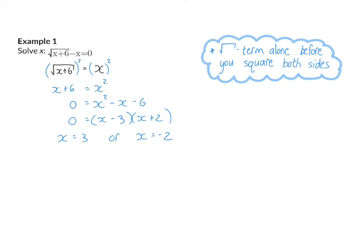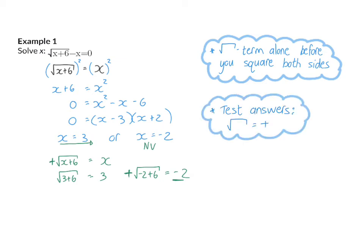Another very important thing to remember with square root equations — just like with fraction equations — is to always test your answers. To test, focus on the step where the square root is alone. We can clearly see the positive root has been given. Substituting x equals 3 gives a positive result, so x equals 3 is valid. Substituting x equals minus 2 gives a positive root equal to a negative value, which is not possible, so minus 2 is not valid.